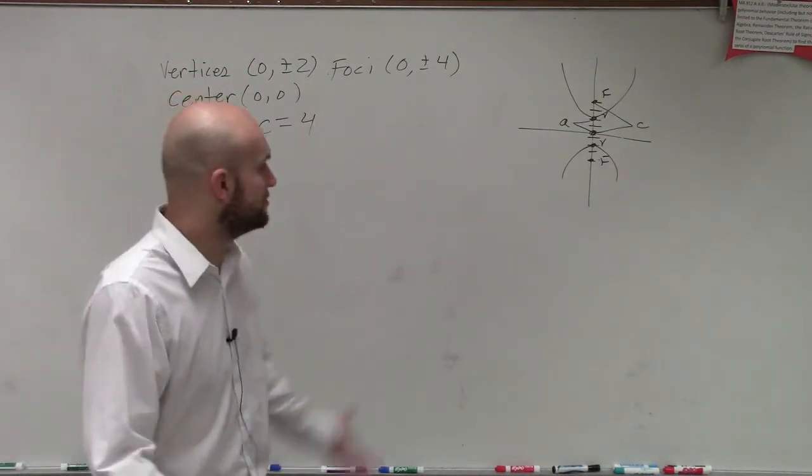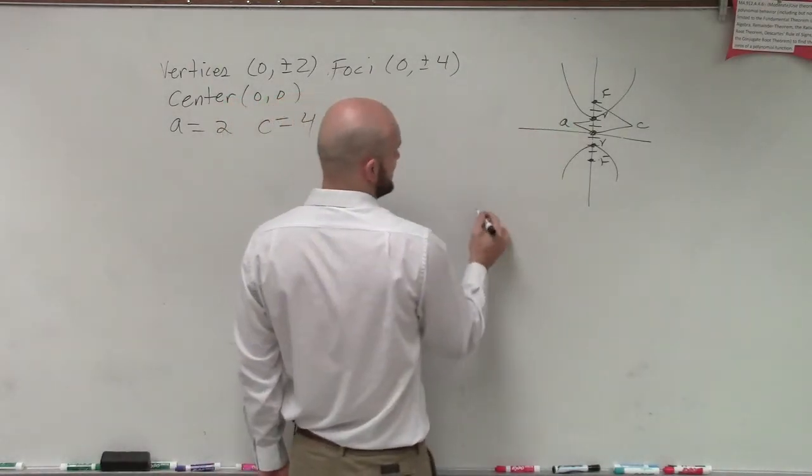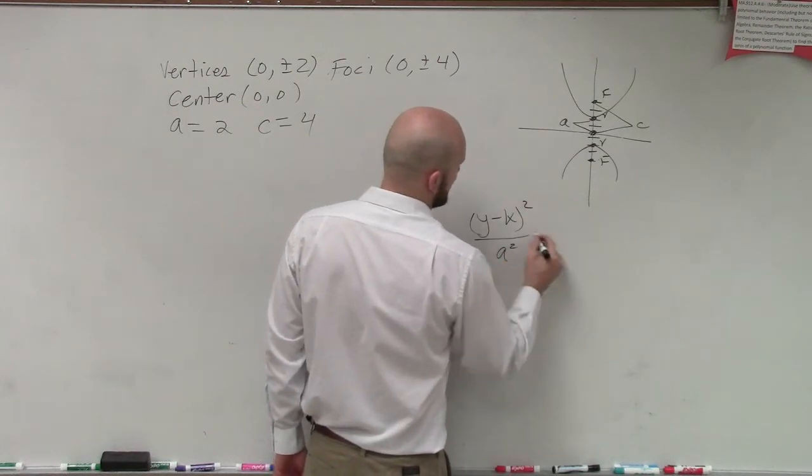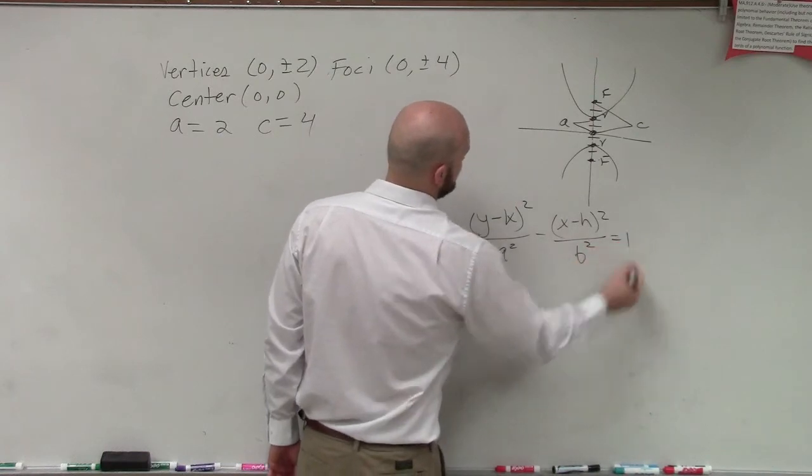And the last thing we need to do for our formula, so here's the formula. We know that since it's vertical, it's going to take the shape of (y - k)² / a² - (x - h)² / b² = 1.